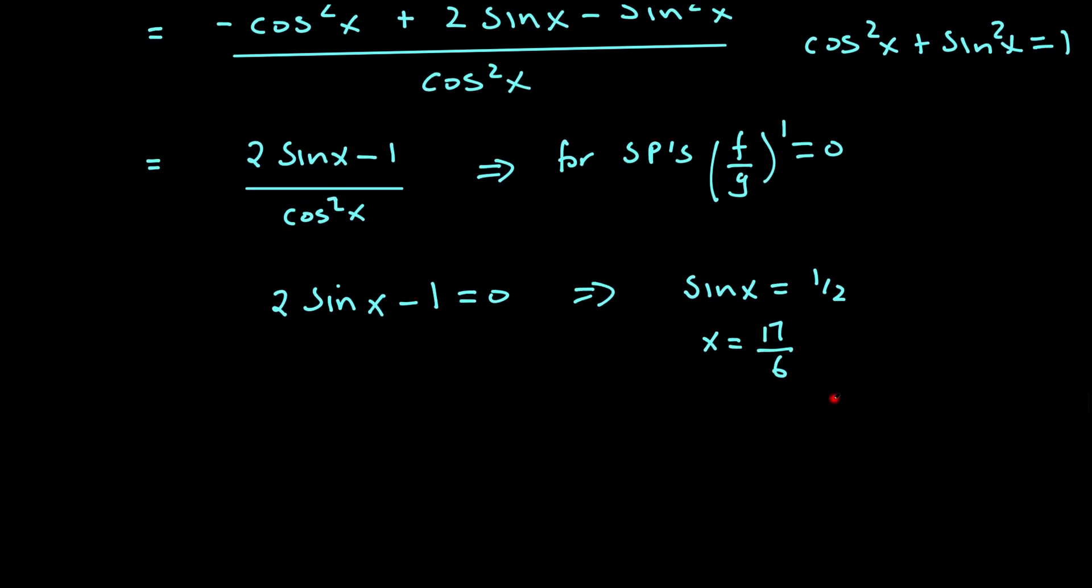So I've got my stationary point, the x-coordinate of the stationary point. Now substituting into y = (2 - sin x) / cos x, I'm going to substitute this in.